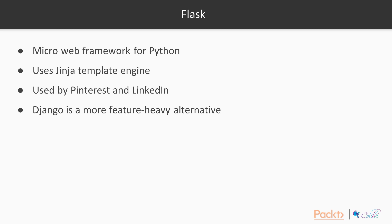Flask is used by the likes of Pinterest and LinkedIn. When thinking about Python web frameworks, Django is often the most obvious alternative. It's a much more feature-heavy alternative — it provides an all-inclusive experience. You get an admin panel, database interfaces, and an ORM. It also provides its own template engine, which is quite similar to Jinja. But one of the great things about Django is that it's also powerfully configurable, so you could choose to use Jinja instead, and similarly override many of the other out-of-the-box defaults to better suit your personal preference or system requirements.